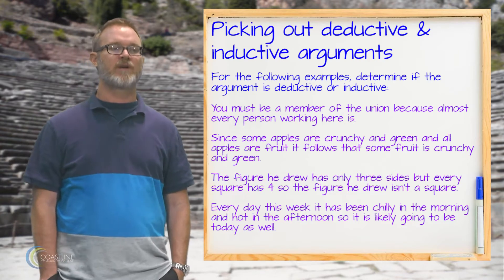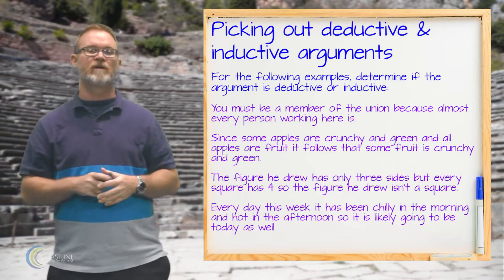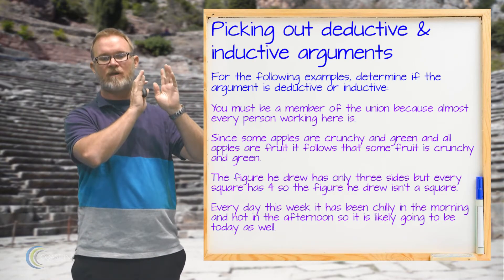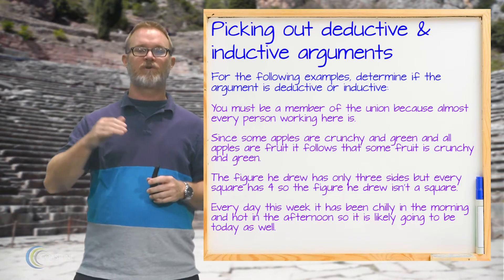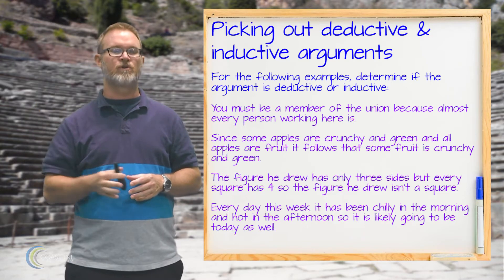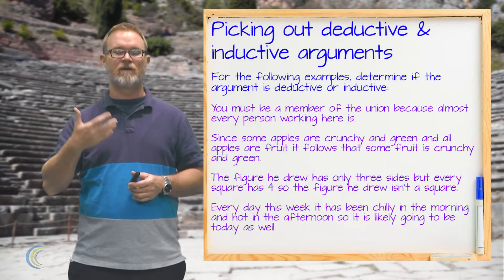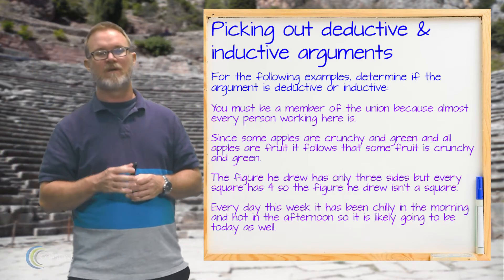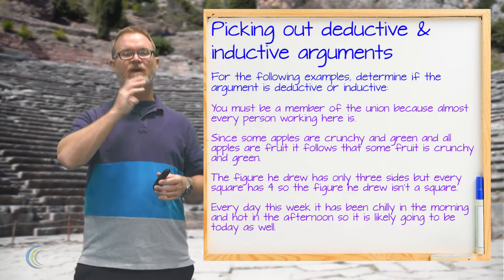This next set of exercises is about how to pick out a deductive argument from an inductive one. Deductive arguments have a necessary connection between premises and conclusion — they are valid and sound. Inductive arguments only support the likelihood or probability that the conclusion is true. Even if the premises are true, an inductive argument only guarantees the conclusion is likely. Inductive arguments also tend to make predictions — they're forward-looking, like guesses.